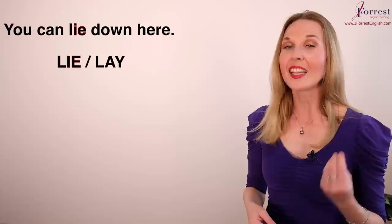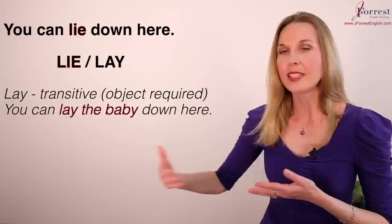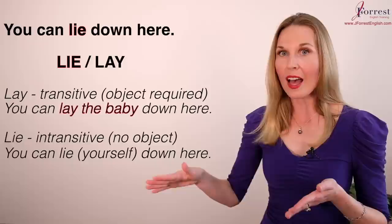Number eleven: You can lie down here. 'Lay' and 'lie' have the same meaning, but 'lay' is transitive — it needs an object: lay the baby down here, lay the blanket down here. 'Lie' is intransitive, so there's no object: lie down here.